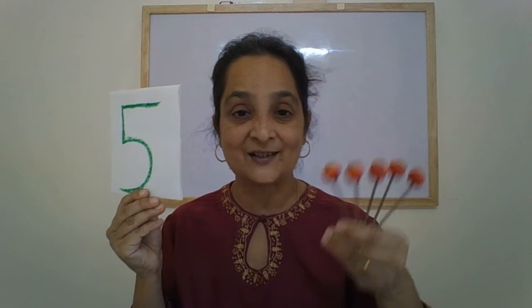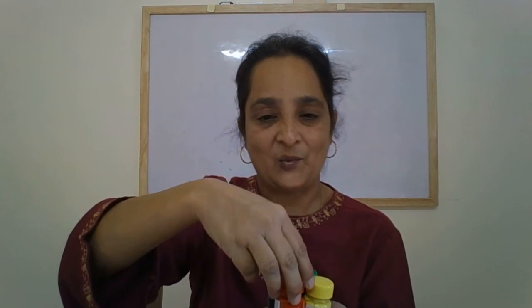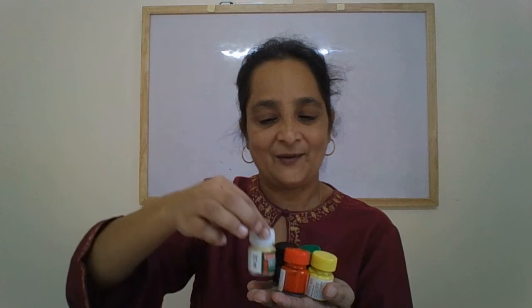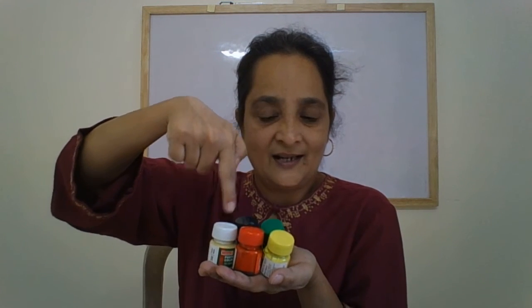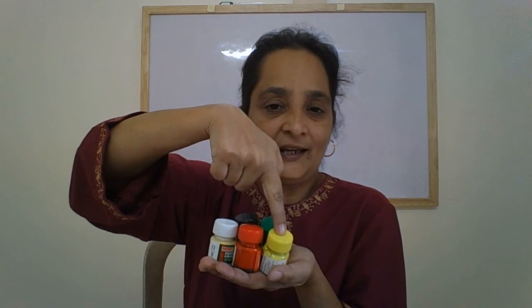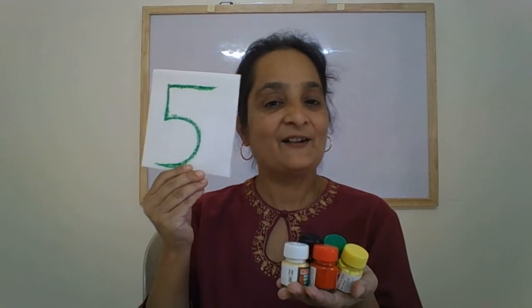Shall we count one more object? This time let us count paint bottles. Green 1, black 2, yellow 3, red 4 and white 5. So I have 5 paint bottles in my hand. Can you see them? 1, 2, 3, 4 and black is 5. So 5 paint bottles and number 5.